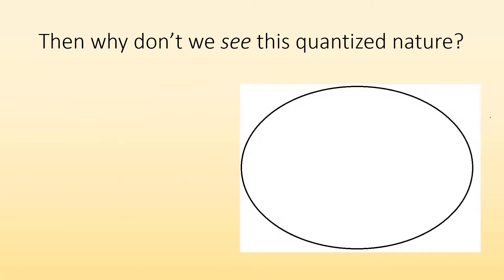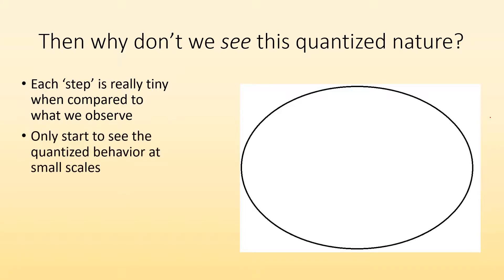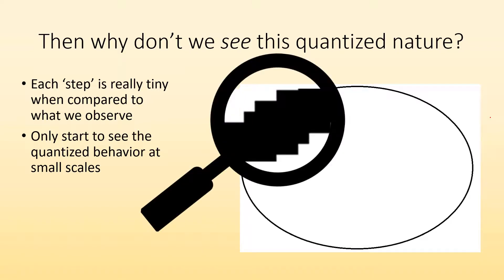So why don't we see this quantized nature then? If everything's quantized, why don't we observe that in my everyday experience? Well, each step is really tiny compared to what we typically observe. We only start to see the quantized behavior at small scale. It's only when we start looking at atoms and subatomic particles that we'll start to see this. So here I have a circle. It looks like a perfect line. It looks continuous. But if you were to zoom in, you'd be able to see each little pixel. It's not this perfect continuous thing. You have finite discrete things. It's either a filled in pixel or it's not.